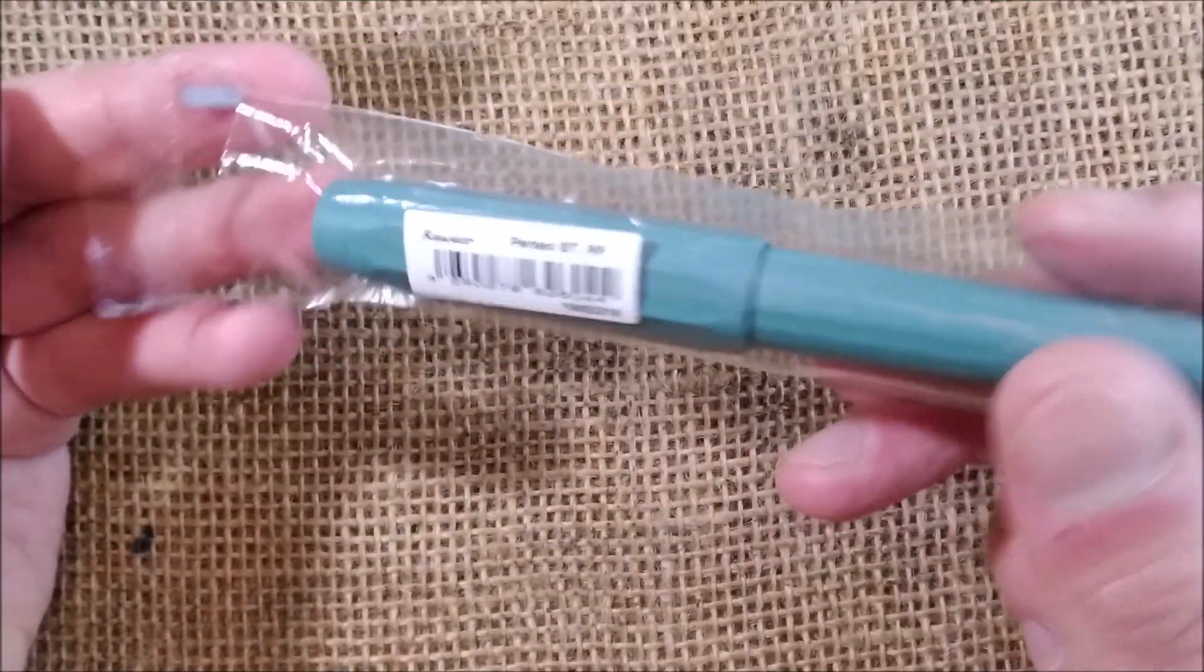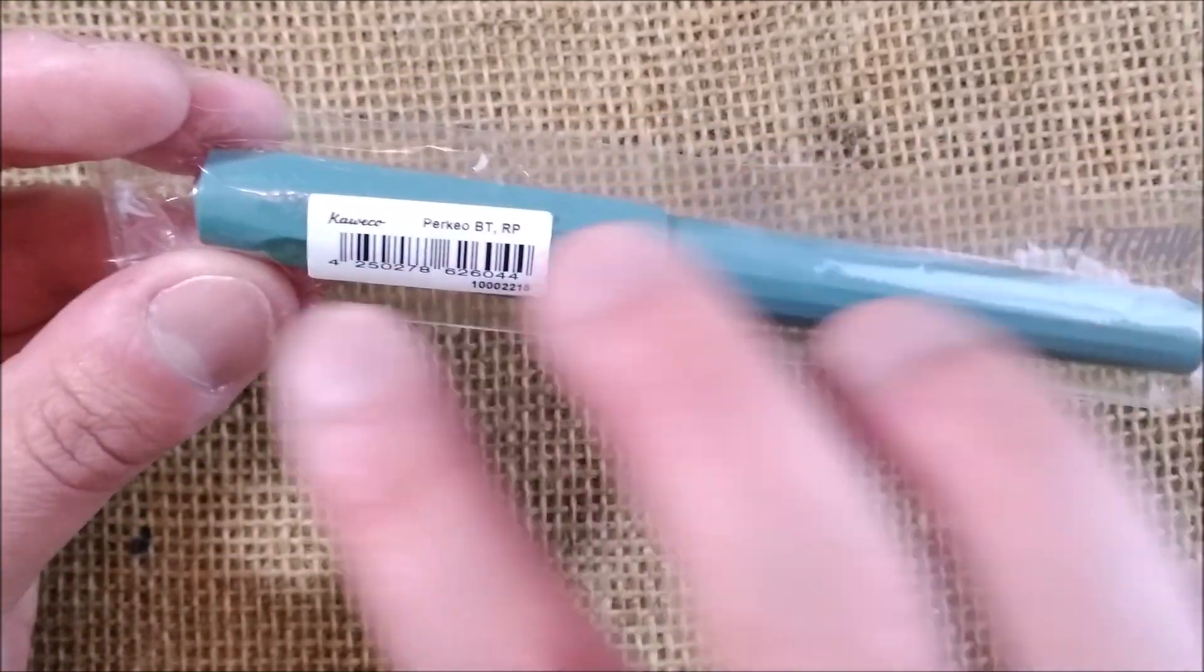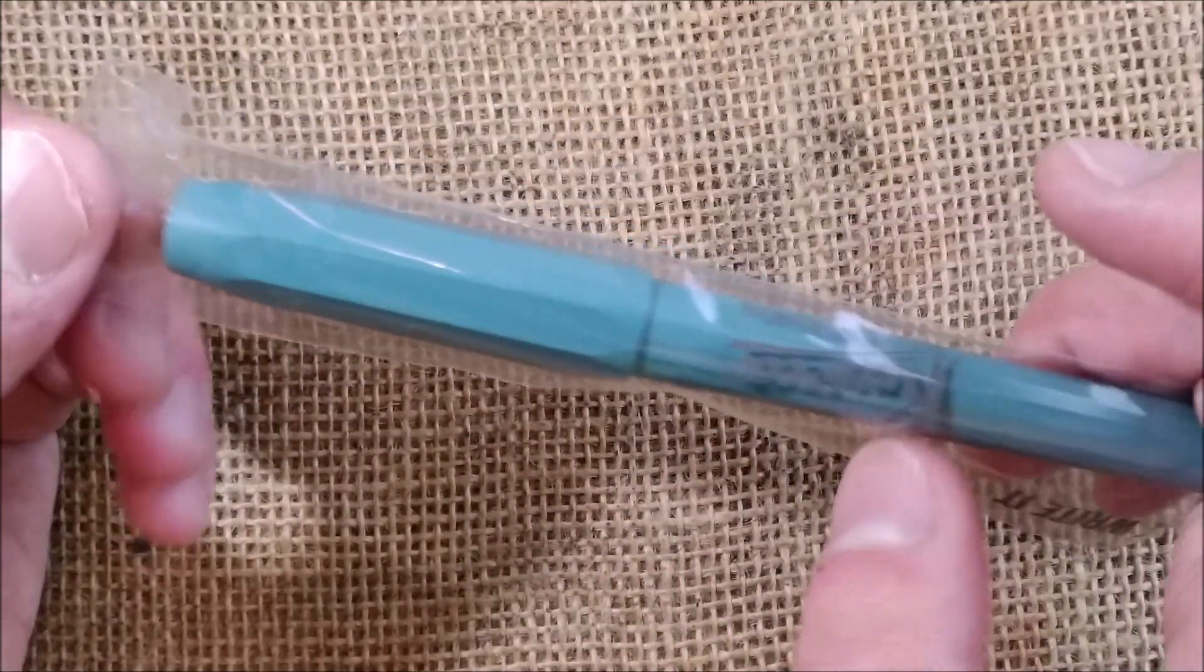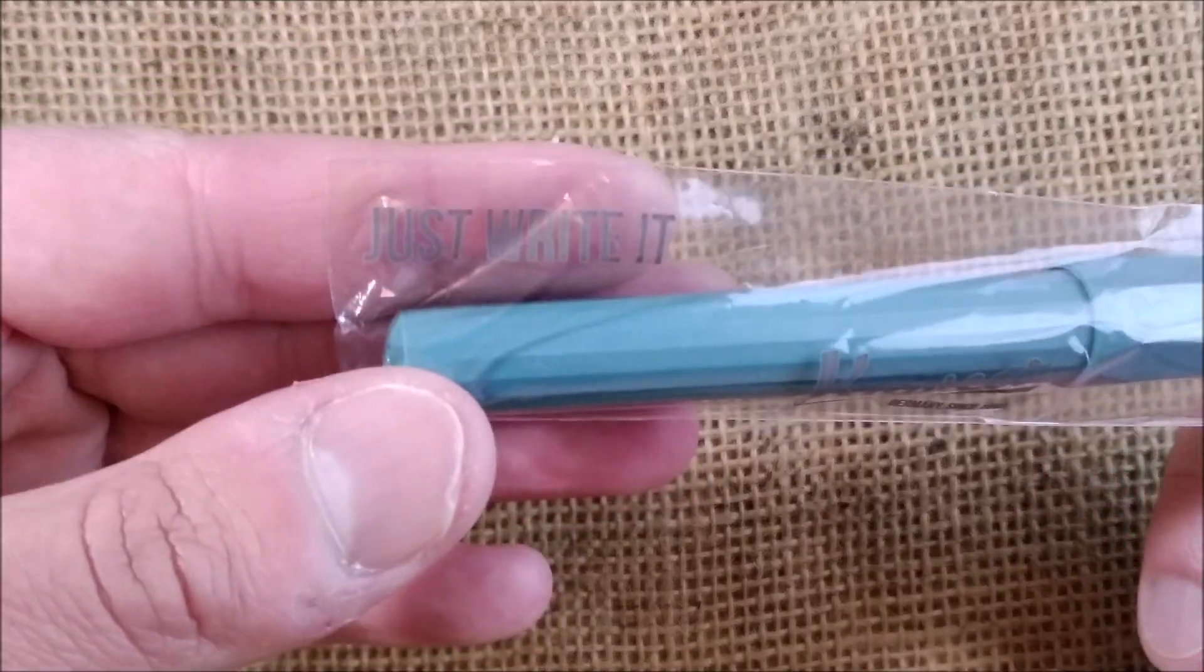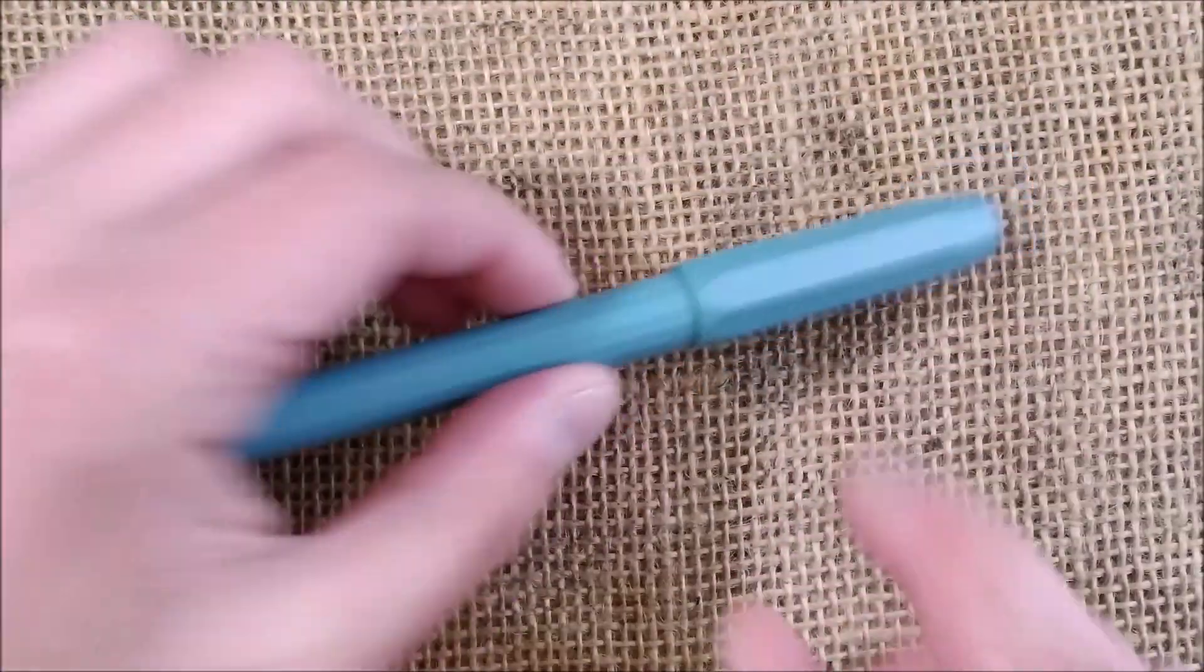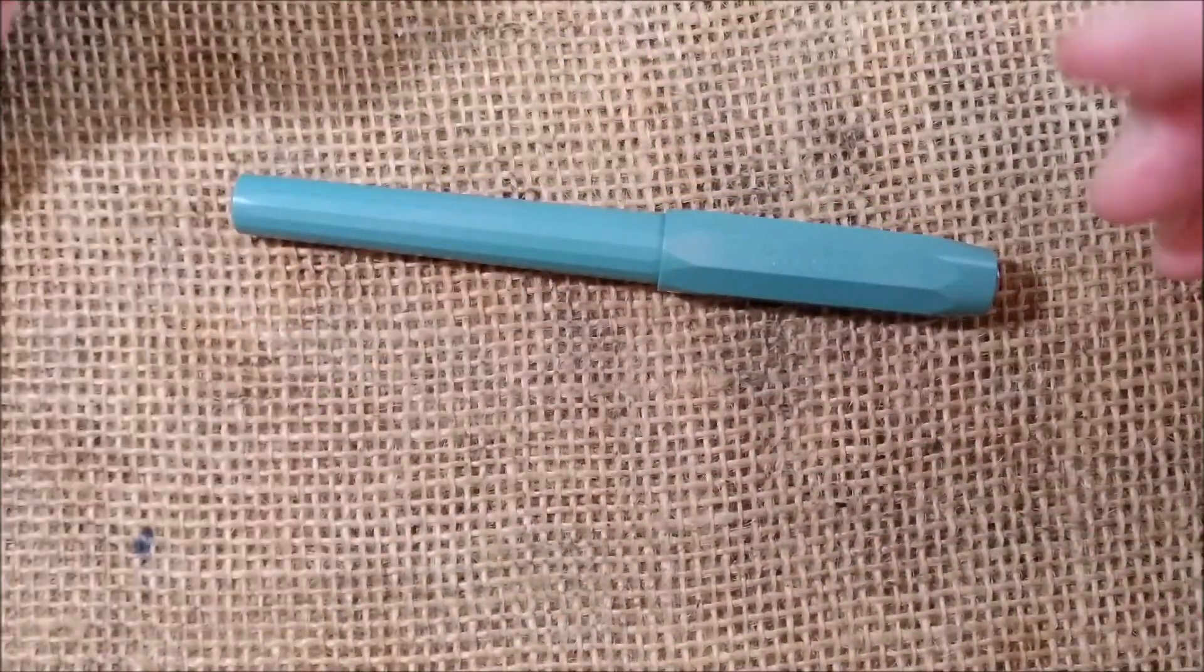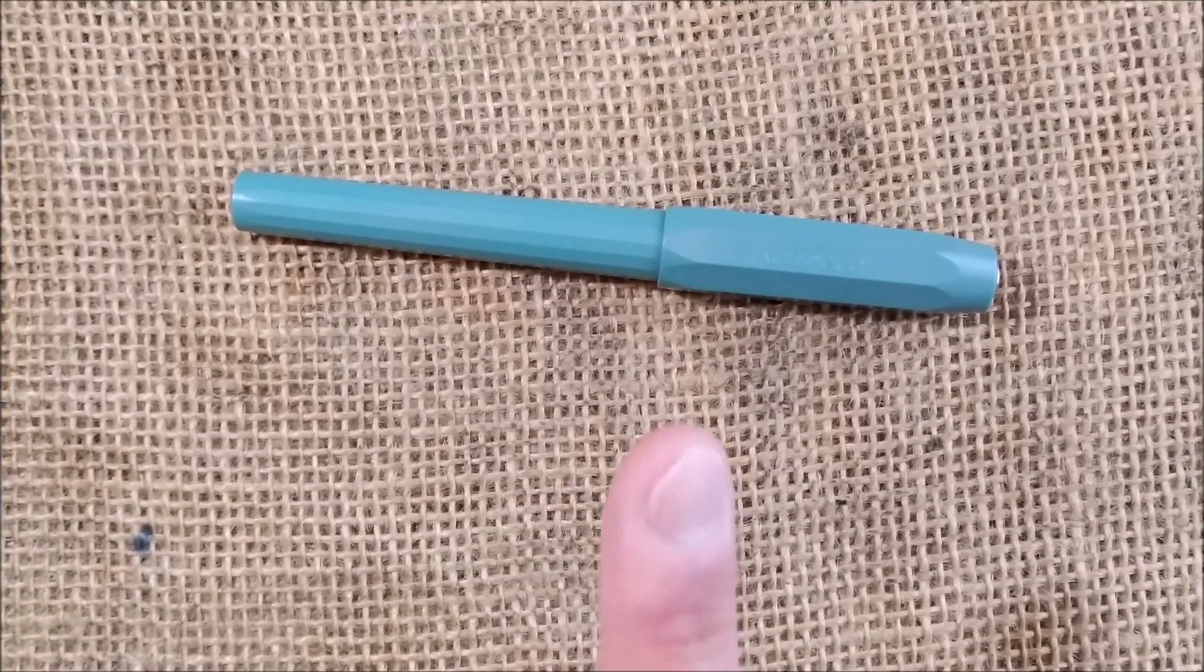First, how does it present itself? It comes inside this plastic sleeve very simply. It has the name, the code of the pen there. And it says here on the sleeve, just write it. You take this out. So you have just write it and Kaweco. And here you have. This is the Kaweco Perkeo rollerball of the color Breezy Teal.